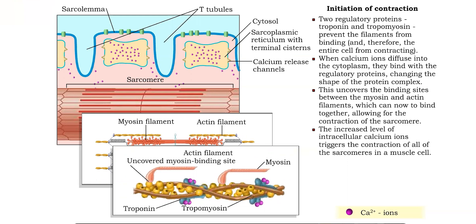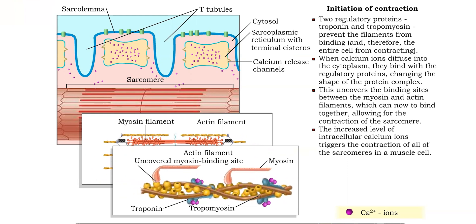The release of calcium ions triggers the contraction of the muscle cell's contractile proteins. Click on the sarcomere to learn how a muscle cell relaxes after contraction.